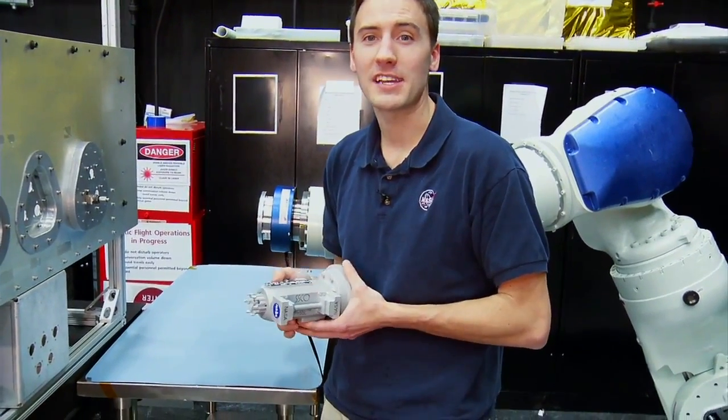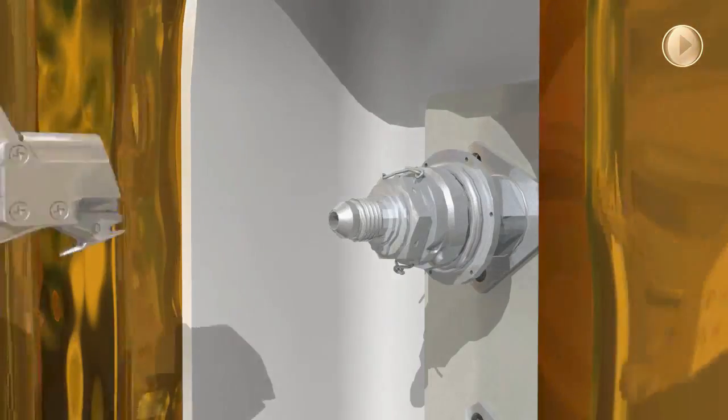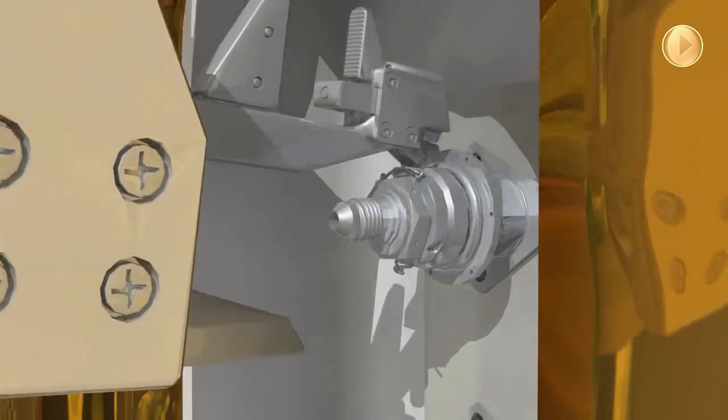Some of the challenging aspects of this task include this valve. This is a standard satellite valve that they use for filling satellite with fuel on the ground and then it's sealed up, never meant to be open again in space.